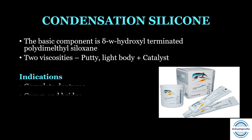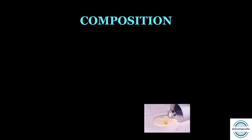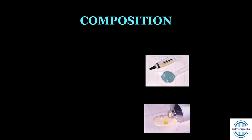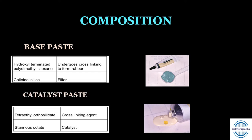Condensation silicone is mainly used in complete denture and crown and bridge impressions. Trade names include Speedex or Primasec. Composition — base paste contains hydroxyl-terminated polydimethylsiloxane (basic polymer, undergoes cross-linking to form rubber) and colloidal silica as filler. The reactor/catalyst contains tetra ethyl orthosilicate as the cross-linking agent and stannous octoate as the catalyst — a common multiple choice question.